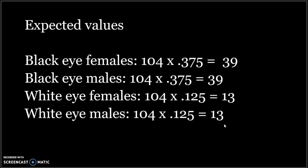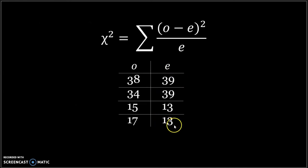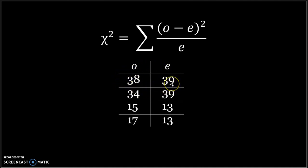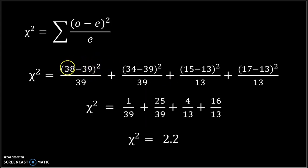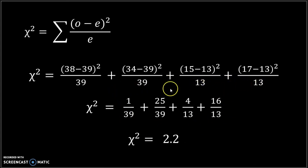Now that we have the calculated expected values, we have all the variables needed for the chi-squared calculation. Remember that O represents the data collected from the F2 generation. When we do the chi-squared calculation, use the corresponding observed and expected values for each category — for example, the observed for black-eyed females with the expected for black-eyed females. For each category, subtract the expected from the observed, square that result, then divide by the expected. This example has four categories. After completing the calculation for each category, add the resulting values to get the chi-squared value. In this case, the chi-squared value is 2.2.